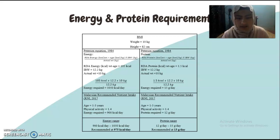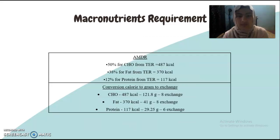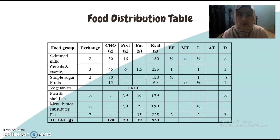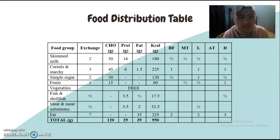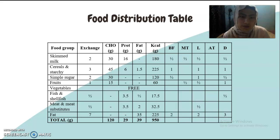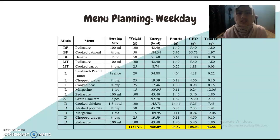I have calculated the energy and protein requirements for this patient. The recommended energy intake is 975 kcal per day and protein is 13 grams per day. For the macronutrient distribution, I suggest 50–58% carbohydrates, 58% fat, and 12% protein. Here is the food distribution level: cereal and starchy foods at 3 exchanges, simple sugar at 2 exchanges, fruit at 1 exchange, fish and meat at half exchange, and fat at 7 exchanges.